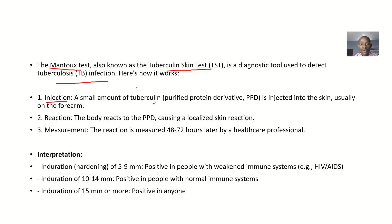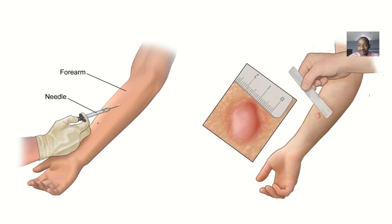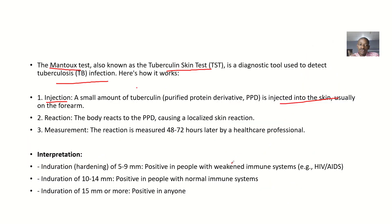Injection: a small amount of tuberculin, also known as purified protein derivative or PPD, is injected into the skin — just subcutaneous. This injection is usually done in the forearm. The swelling is what you're trying to measure afterward, and the size of the swelling will indicate something which we'll look at.